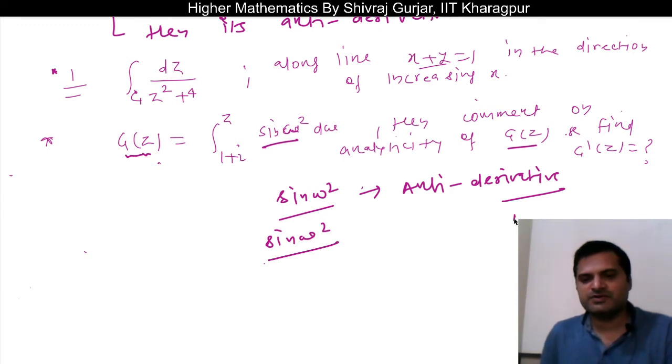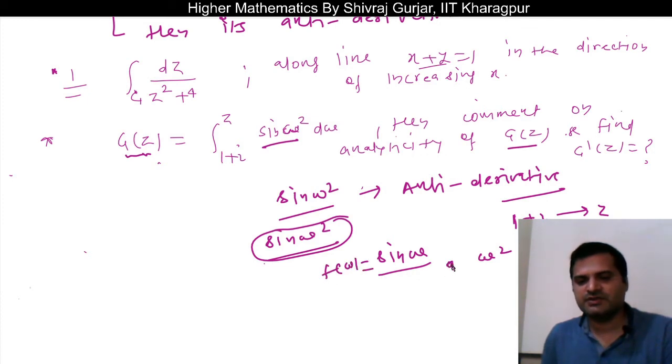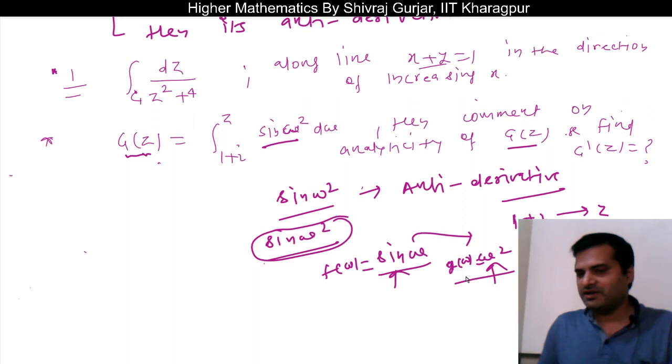This curve is from 1 plus iota to z. Is this analytic? First of all, sin omega square is nothing but combination of sin omega and omega square. If we take f(omega) and g(omega), this is the composition. This is trigonometric function and this is polynomial function. When they are analytic, their composition will be analytic. So this is analytic in the definition domain. So this antiderivative exists.